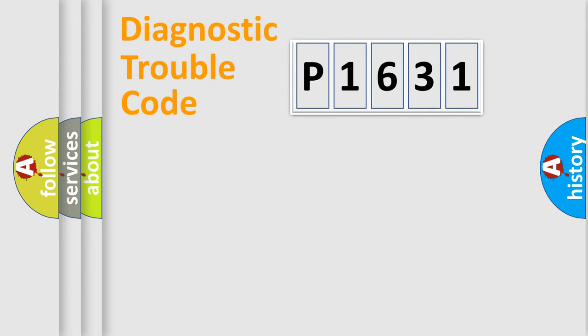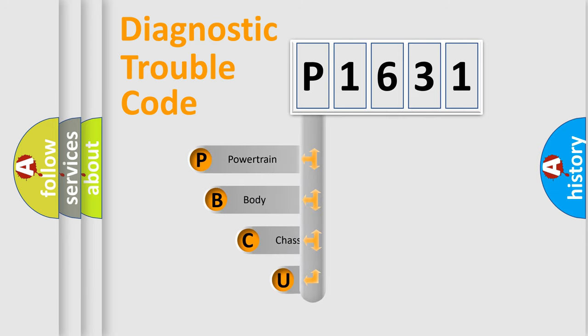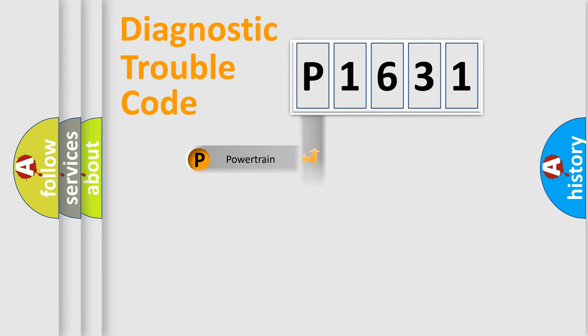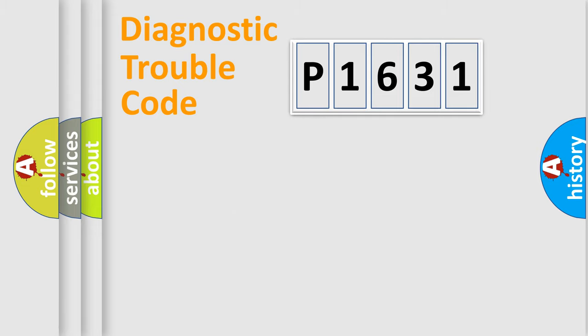Let's do this. First, let's look at the history of diagnostic fault code composition according to the OBD2 protocol, which is unified for all automakers since 2000. We divide the electric system of an automobile into four basic units: Powertrain, Body, Chassis, and Network.